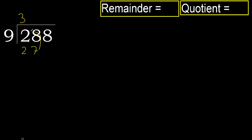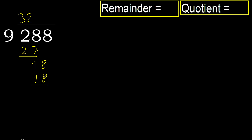27 is not greater. 28 minus 27 is 1. Bring down 8 — next is 18. 9 multiplied by 2 is 18, which is not greater. 18 minus 18 is 0.